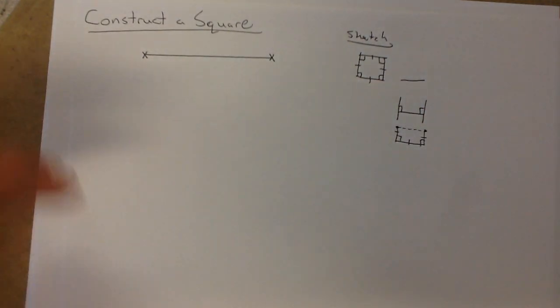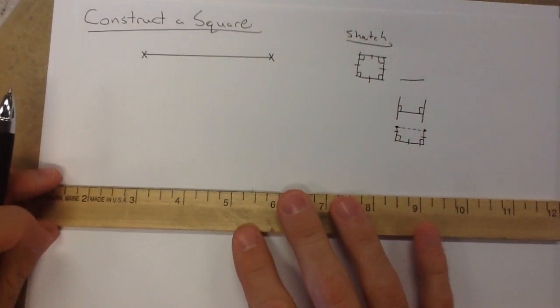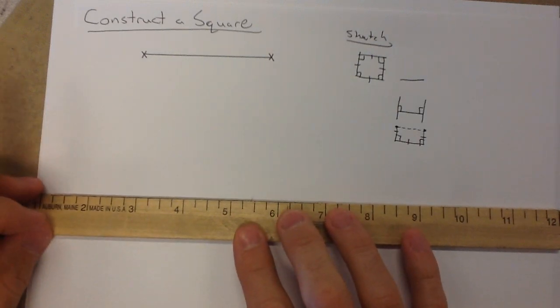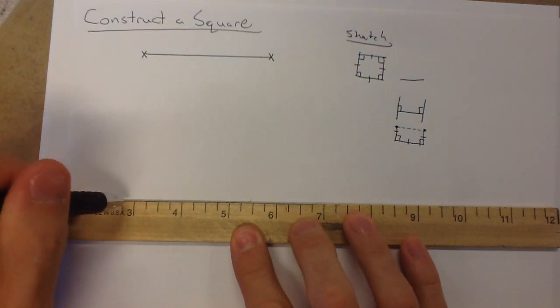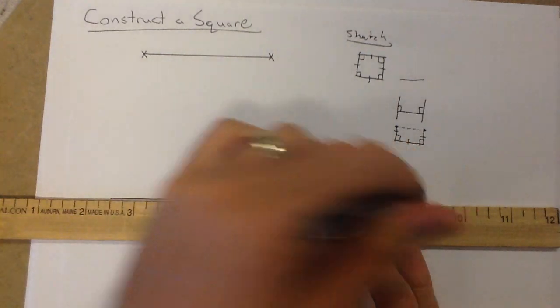And then from those points, it should close in and give me my square. So it's a couple processes to do it, but really, it's only a couple steps. It's copy a segment and make a perpendicular. So if I can do those, then I can construct a square or really any other types of quadrilaterals. Maybe it throws in the need for a parallel or something, but it's really the little steps that combine for the big ones.